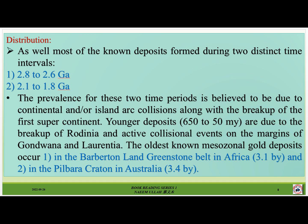Most of the known deposits formed during two distinct time intervals: number one, 2.8 to 2.6 billion years, and number two, 2.1 to 1.8 billion years. The prevalence for these two time periods is believed to be due to continental and/or island arc collisions, along with the breakup of the first supercontinent. Younger deposits, 650 to 50 million years, are due to the breakup of Rodinia and the active collisional events on the margins of Gondwana and Laurasia.